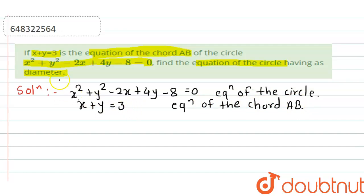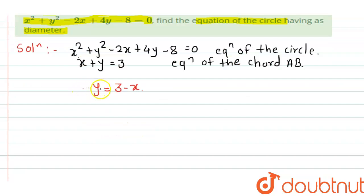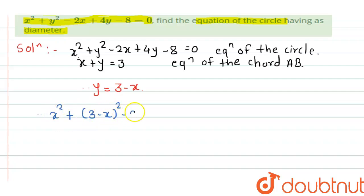The equation of chord AB is x + y = 3, therefore y = 3 - x. Putting this value y = 3 - x into the equation of the circle, we get x² + (3 - x)² - 2x + 4(3 - x) - 8 = 0.